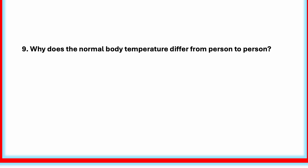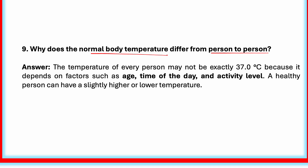Why does the normal body temperature differ from person to person? The temperature of every person may not be exactly 37 degrees Celsius because it depends on factors such as age, time of the day, and activity level. A healthy person can have a slightly higher or lower temperature. Some people may have a temperature a little higher or lower than 37 degrees Celsius, and that is still normal.